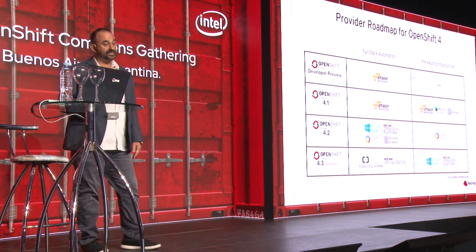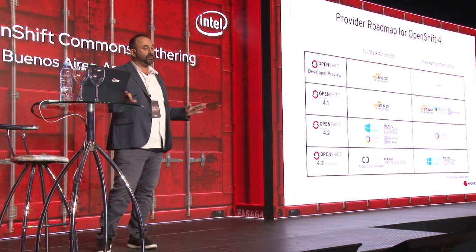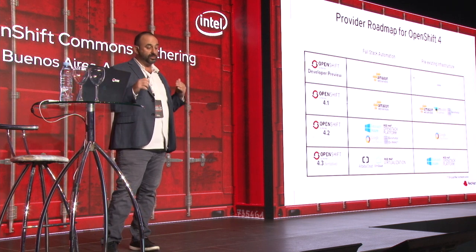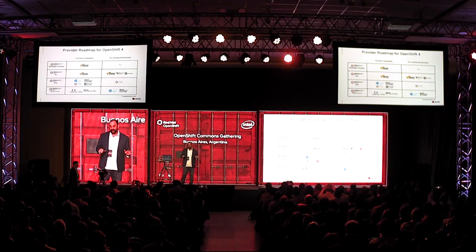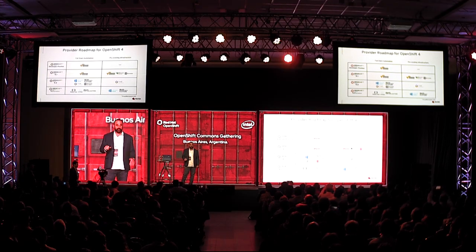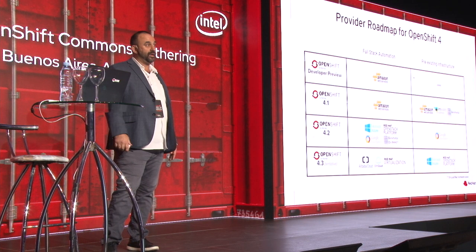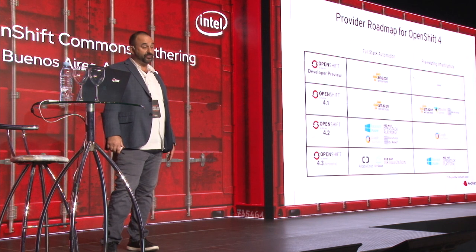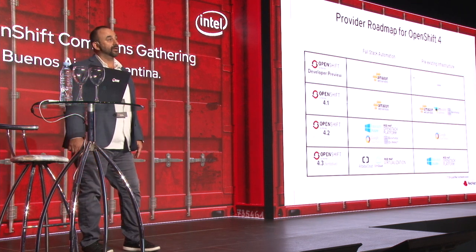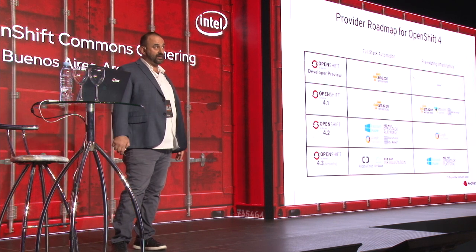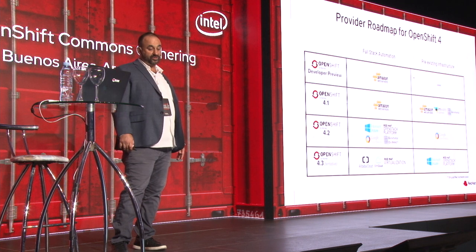Here is our provider roadmap showing all the platforms we'll support. Currently OpenShift 4.1 supports Amazon Web Services for full-stack and pre-existing, plus VM, bare metal, and pre-existing. For 4.2 we're adding Microsoft Azure, GCP, OpenStack Platform, and bare metal on RHAI for full-stack automation, plus GCP for pre-existing infrastructure. In 4.3 you'll get Alibaba Cloud, IBM Cloud, and Red Hat Virtualization support as well.